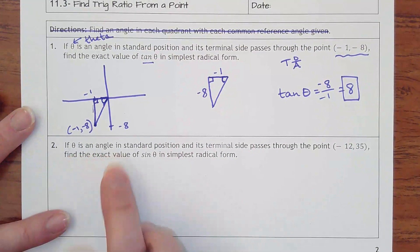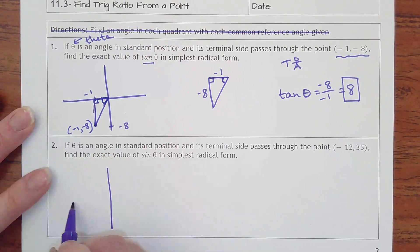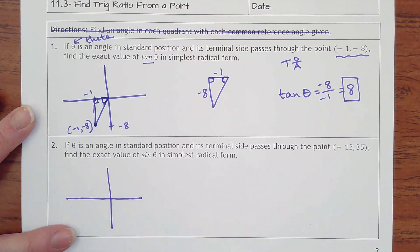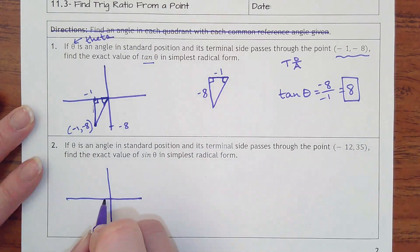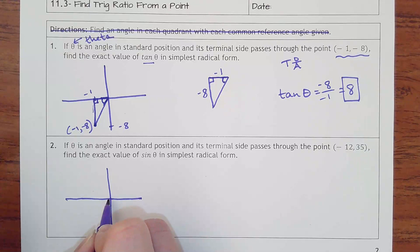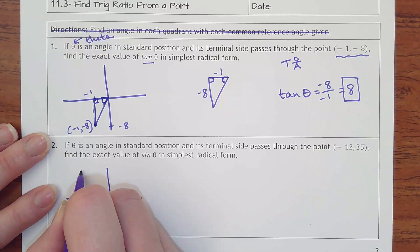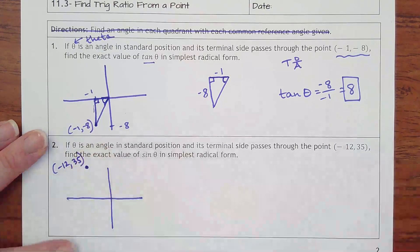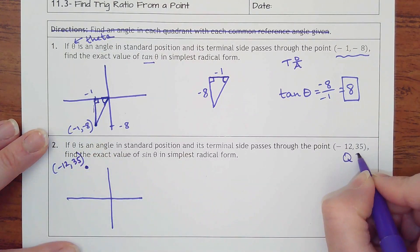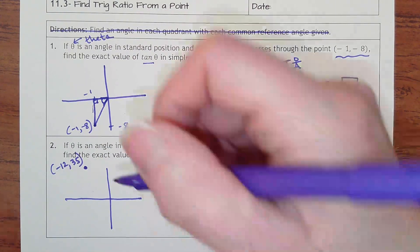Okay, let's try another one. If theta is an angle in standard position, so just means our reference angle and everything, its terminal side passes through the point (-12, 35). So let's think about what quadrant that's in. Having a negative x and a positive y would put you up here, in quadrant 2. Find the exact value of sine of theta.